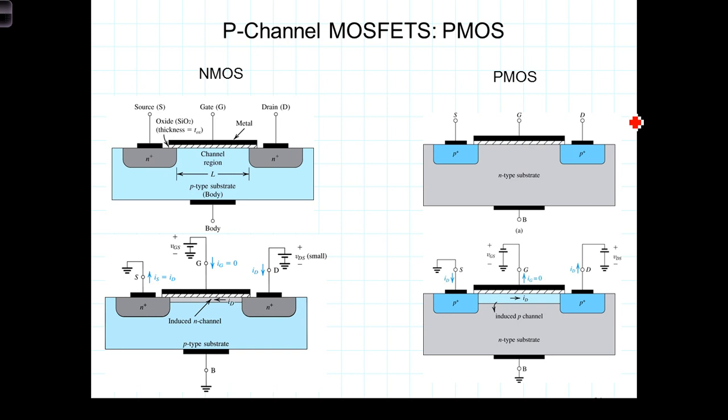P-channel MOSFETs exist on a lightly doped N-type substrate. The source and the drain now consist of heavily doped P-type regions.